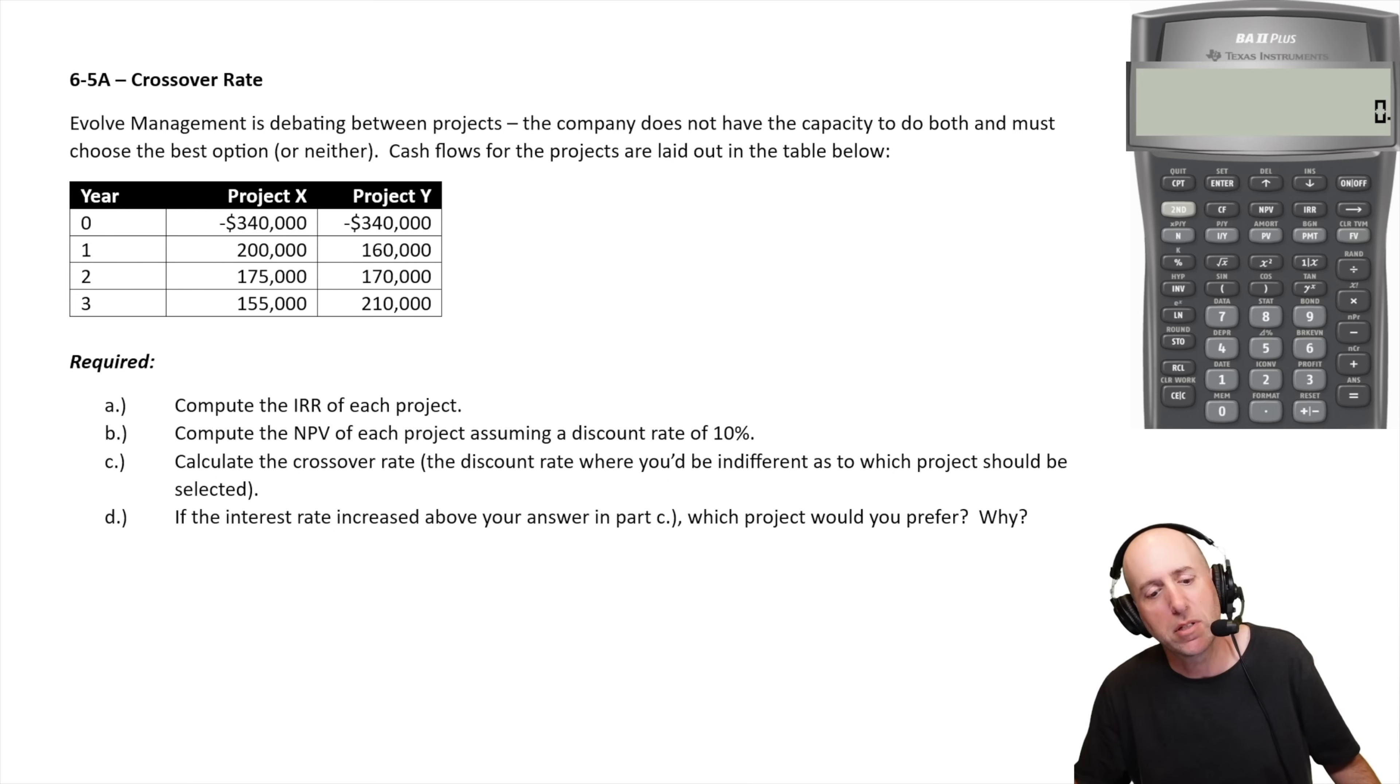Involved management is debating between two projects. The company does not have the capacity to do both and must choose the best option or neither. Cash flows for the projects are laid out in the table below. This is the start, this type of question.